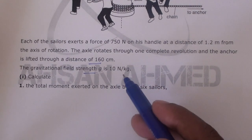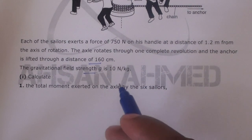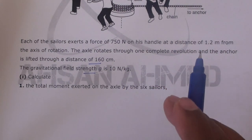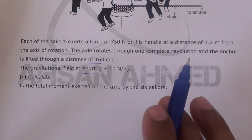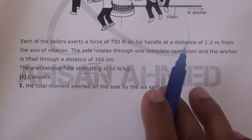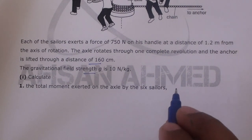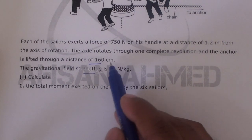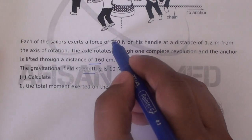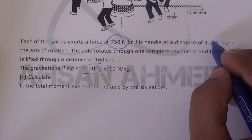The remaining parts of this question will not be solved right now because they are related to work, energy, and power chapters, not to the turning effect of forces or principles of moment. When we reach those chapters, we will solve those parts. For now, the important information is that they are applying a force of 750 newtons at a distance of 1.2 meters from the axis of rotation.